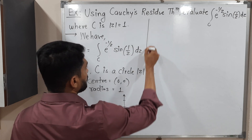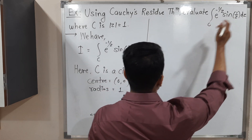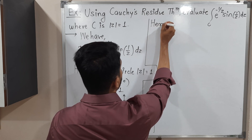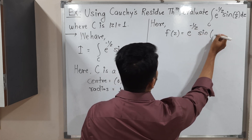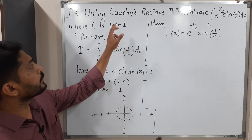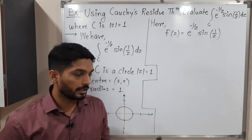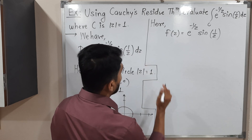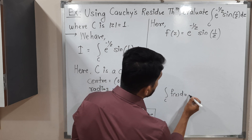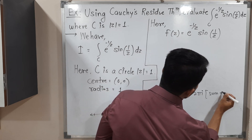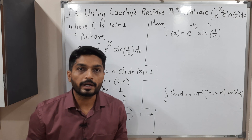Now the second important step is to note down the function inside the integral. We call it f(z), so f(z) = e^(-1/z) · sin(1/z). They have asked us to solve this with the help of Cauchy's residue theorem. The statement of Cauchy's residue theorem is: the integral over C of f(z) dz equals 2πi times the sum of residues.